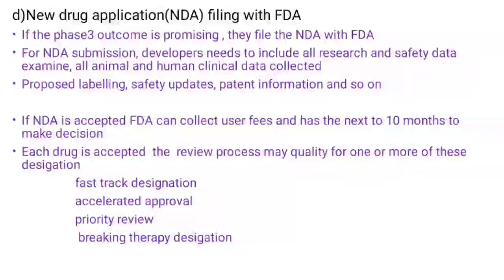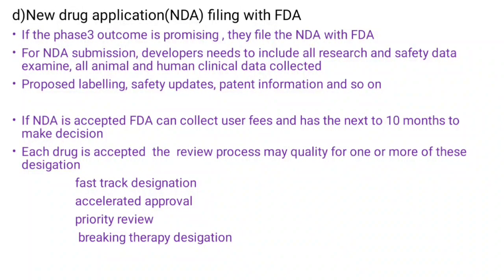New Drug Application (NDA) filing with FDA: if the Phase 3 outcome is promising, the company files an NDA with the FDA. For NDA submission, all research and safety data examined, all animal and human clinical data collected, proposed labelling, safety update, and patent information are required. If the NDA is accepted, the FDA can collect user fees and has up to 10 months to make a decision. The review process may qualify a drug for designations such as fast-track designation, accelerated approval, priority review, or breakthrough therapy designation.